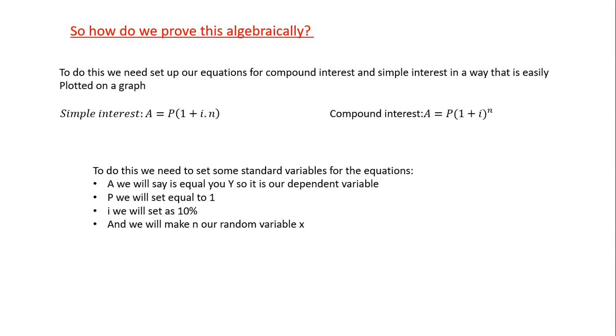And at the end, I'm going to show you how we could also have solved this numerically. And when I go through that, it's going to actually make the method I used here make a lot more sense. The way that we do this is that we first get our simple interest and our compound interest formula. So simple interest is A = P(1 + i·n), and compound interest is A = P(1 + i)^n, where A is the final value, P is the initial value, i is the interest, and n is the time.